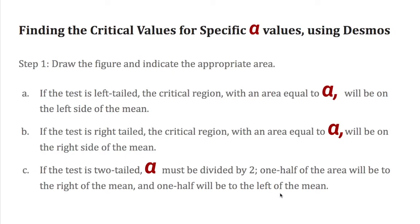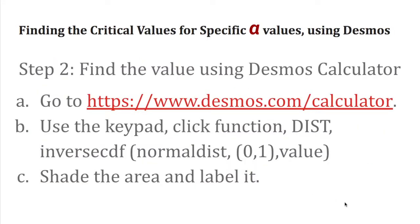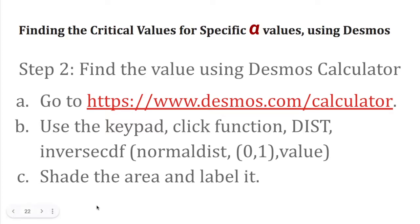The key thing to remember is: when it is two-tailed, divide the value of A by 2. Now, to use Desmos calculator, go to the keypad, click function, then dist, then inverse, then normal distribution, type 0 comma 1, then the d-value, shade the area, and label it.